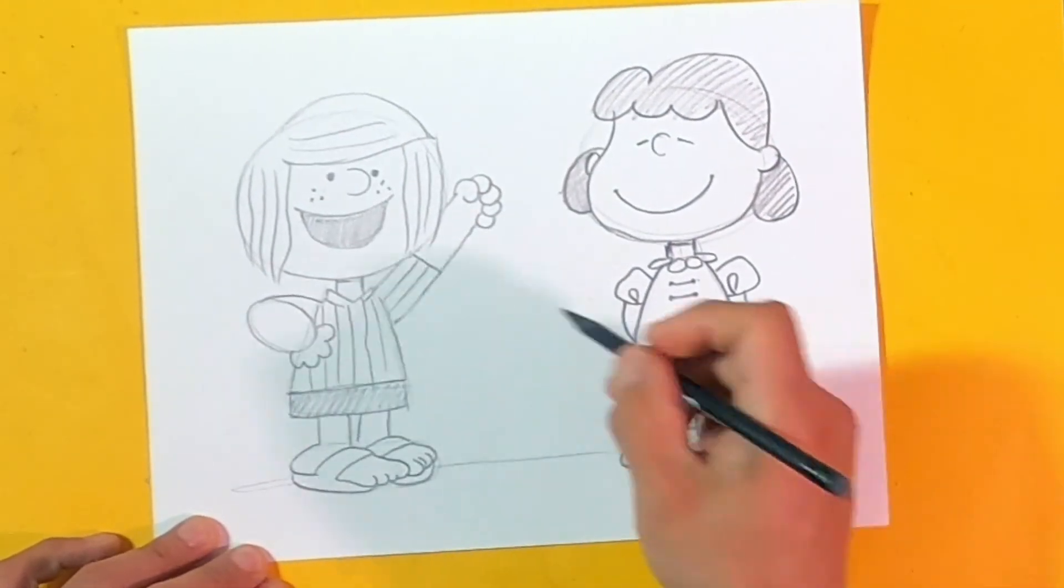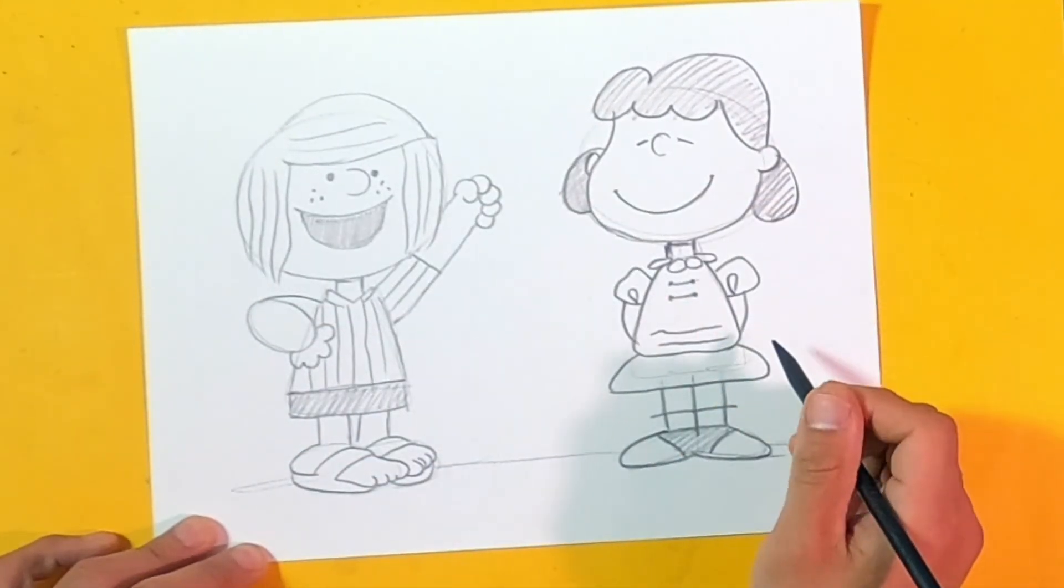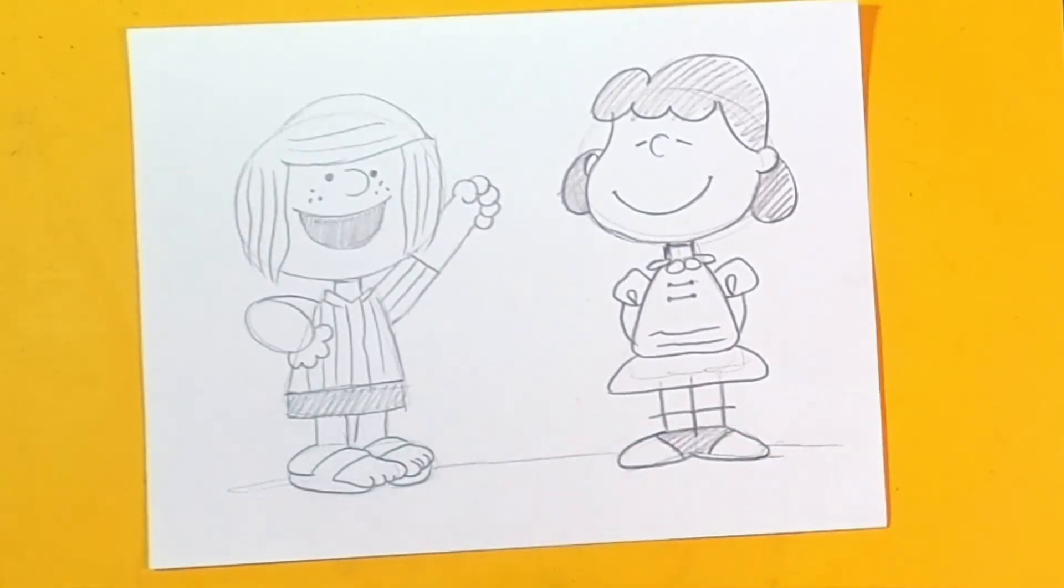All right, again, you can be using this drawing to make it your own. Decide maybe to put some football players in the back or some sports. All right, the next thing I'm gonna do is just trace my picture with a marker and erase the things I don't like.